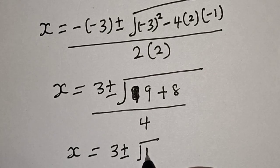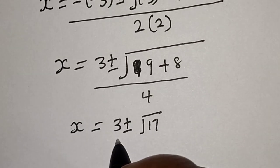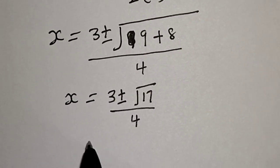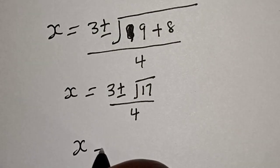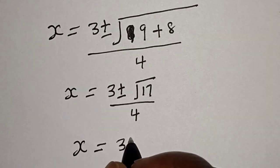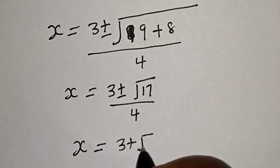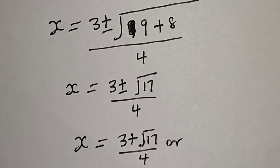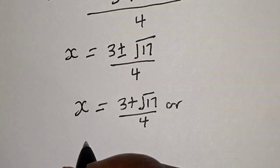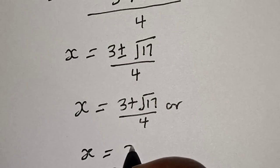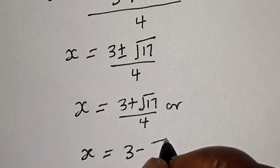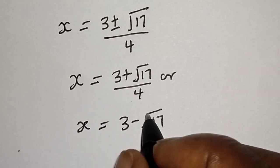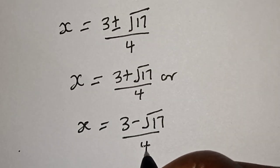So s is equal to 3 plus or minus square root of 17, over 4. Therefore s equals 3 plus square root of 17 over 4, or s equals 3 minus square root of 17 over 4.